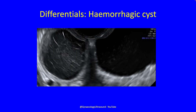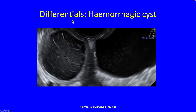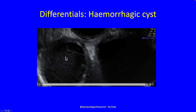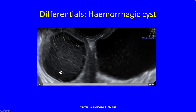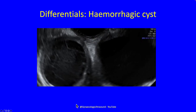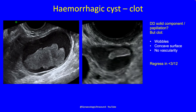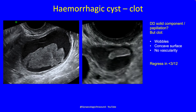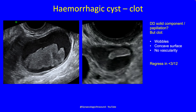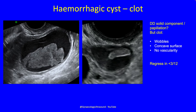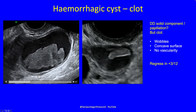One of the differentials is a haemorrhagic cyst. Here on the left of the screen, this is a unilocular cyst with mixed echogenicity contents. There are some fibrin strands running across the cyst, indicative of fresh haemorrhage. A haemorrhagic cyst can contain clot, which you might think initially is a papillation or solid tissue, but clot wobbles — and solid material never wobbles.